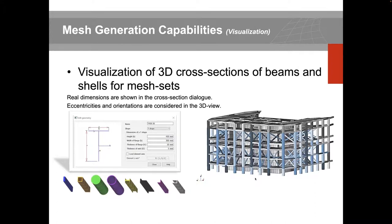After meshing, you can visualize the type of section assigned to the model using different profiles from our library, shown with real dimensions. This lets you check orientation and eccentricity and gives a realistic 3D view of your model — especially useful for beam and shell elements, where instead of lines and plates, you see something that looks close to reality with a real cross-section.